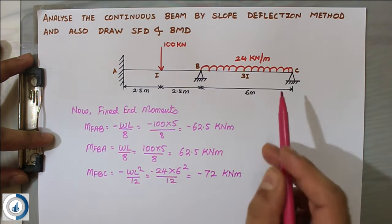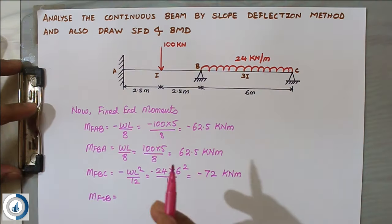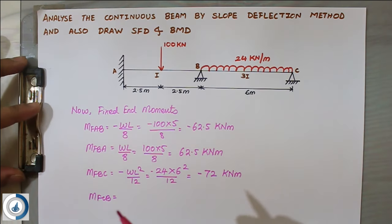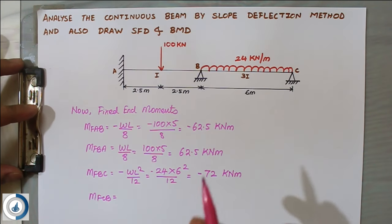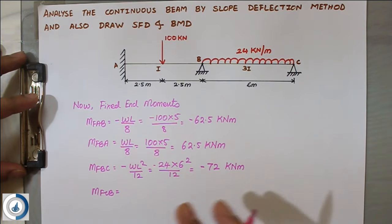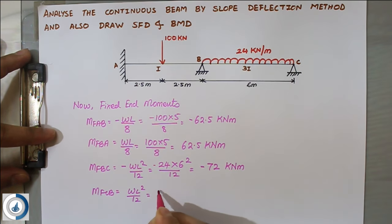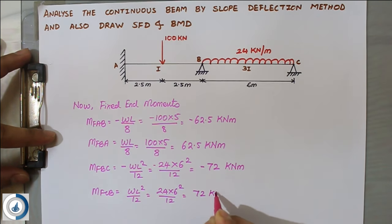MFCB is the last fixed end moment. It is clockwise, so positive: plus 24 × 6² ÷ 12 = positive 72 kNm. Our first step of calculating all four fixed end moments for the given loading conditions is now complete.